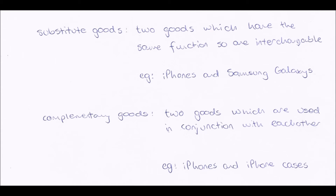Substitute goods have a positive cross elasticity of demand number. These are two goods which have the same function, so they are interchangeable — they do exactly the same thing, so you can switch between them. You can have one or the other, but they both do the same job. An example would be iPhones and Samsung Galaxy phones. They both have access to the internet, make calls, text, and download apps — they do exactly the same thing, so they are substitutes for each other.